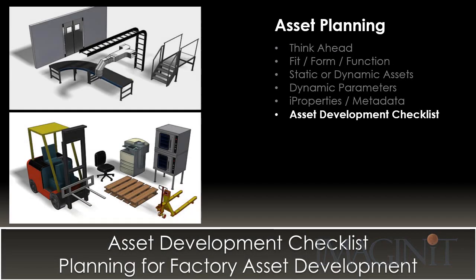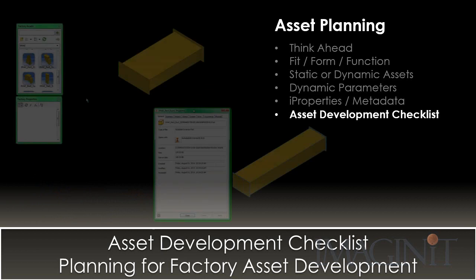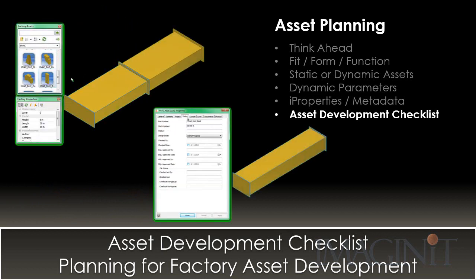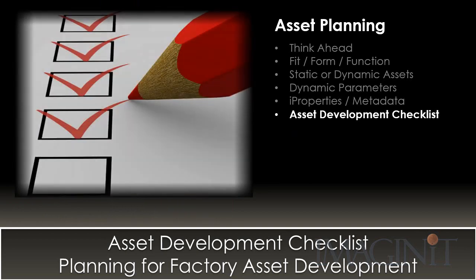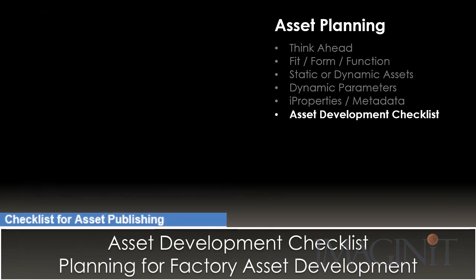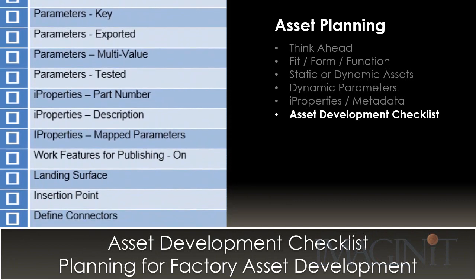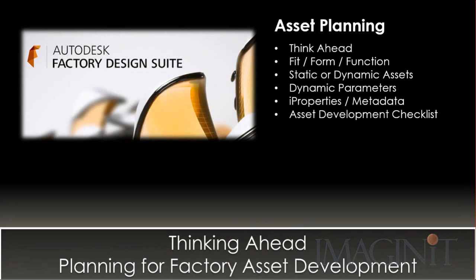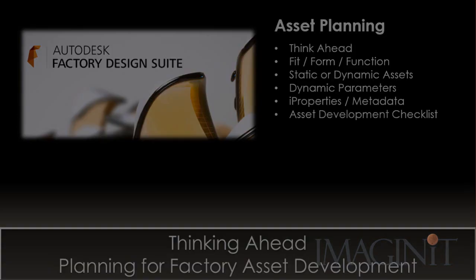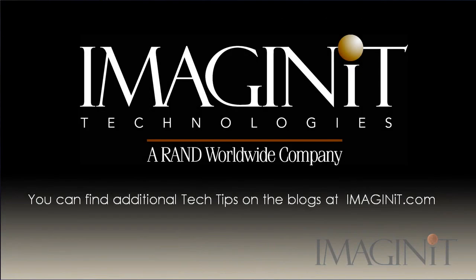The asset development process can be fairly simple or quite elaborate depending on the assets in question and the desired functionality. It's very common to test a recently published asset and discover that there's critical data or functionality that wasn't included. In order to simplify or standardize the asset development process, many users develop a checklist they use each time they generate a new asset. The checklist serves as a reminder of critical points that must be addressed during the asset development process. This concludes the tutorial on planning for factory asset development. If you have questions, please contact your Imaginate Technologies account manager or support representative.